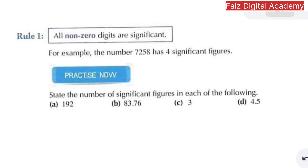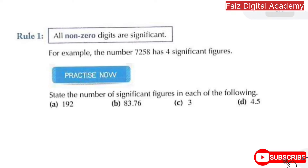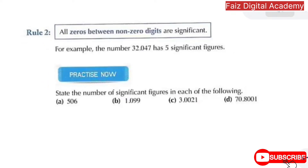The number 3 is one significant figure, and 4.5 is also a significant number having two significant figures. The second rule is: all zeros between non-zero digits are significant.